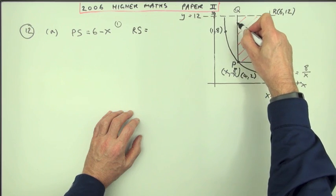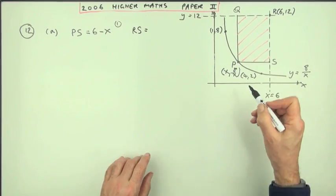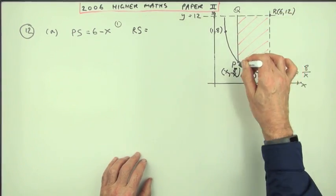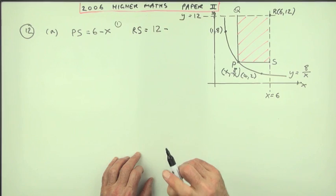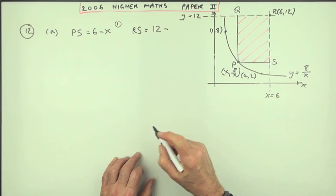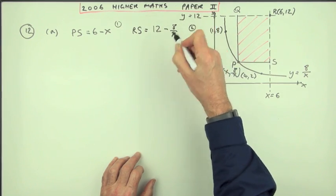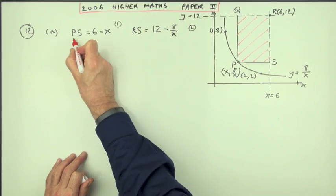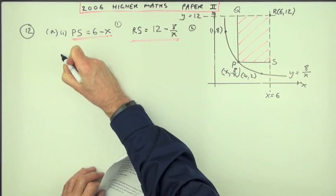RS, which of course is the same as QP, will be the difference in the y-coordinates, being a vertical line. So it'll be 12 minus this y-coordinate—12 minus, and in terms of x because it did say express it in terms of x. Don't write 12 minus y because you just want one variable. Y is equal to 8 over x. That's worth the second mark. That was part one.